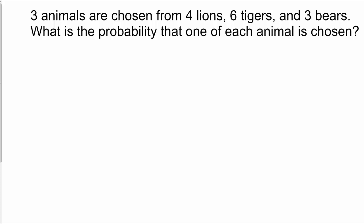We get three animals chosen from four lions, six tigers, and three bears, and we want the probability that one of each animal is chosen. So we've got to, first of all, find out how many ways we can choose one of each animal. Well, if I want one lion, I have to choose from the four to get one lion and ensure I get a lion. To get a tiger, I've got to choose one from six, and a bear, one from three.